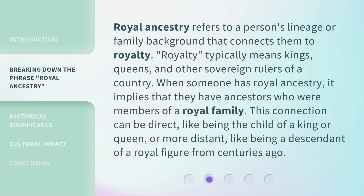Royal Ancestry refers to a person's lineage or family background that connects them to royalty. Royalty typically means kings, queens, and other sovereign rulers of a country. When someone has Royal Ancestry, it implies that they have ancestors who were members of a royal family. This connection can be direct, like being the child of a king or queen, or more distant, like being a descendant of a royal figure from centuries ago.